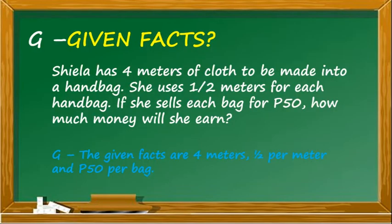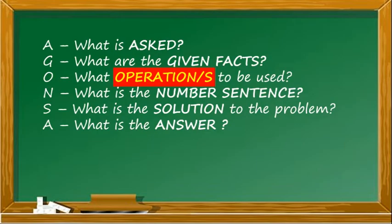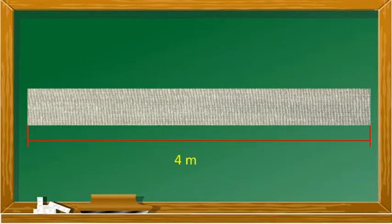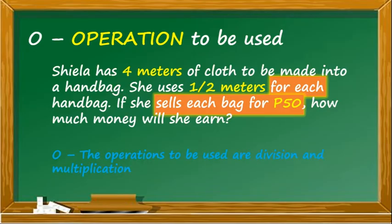Since we have our given facts already, let us try to find out what operation are we going to use. Let's look at the context clues. In the problem, we consider that Sheila uses 1.5 meters for each handbag. It means we are going to use division, since we are going to divide 4 meters by 1.5 to see how many bags can be made out of cloth. Then, let's follow the context of the problem. She is going to sell the bag for 50 pesos each. In this case, we are going to apply multiplication. The operations to be used are division and multiplication.